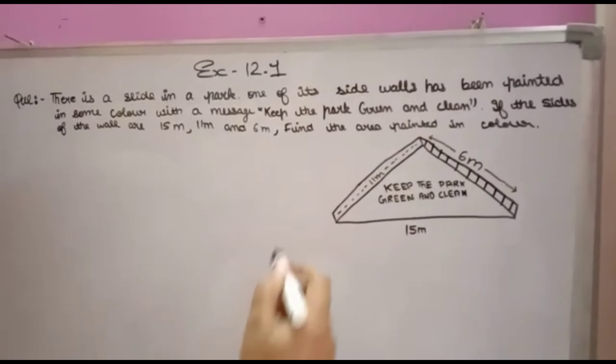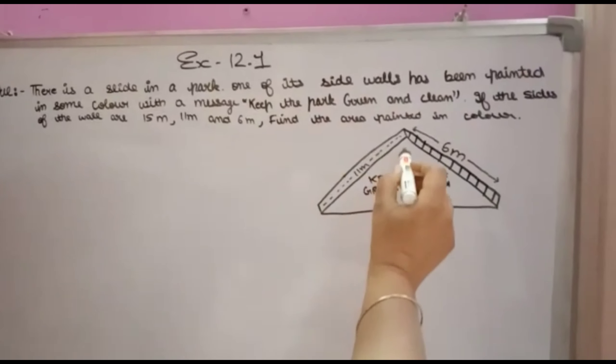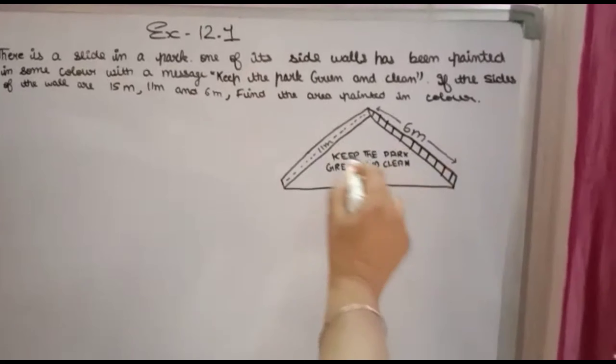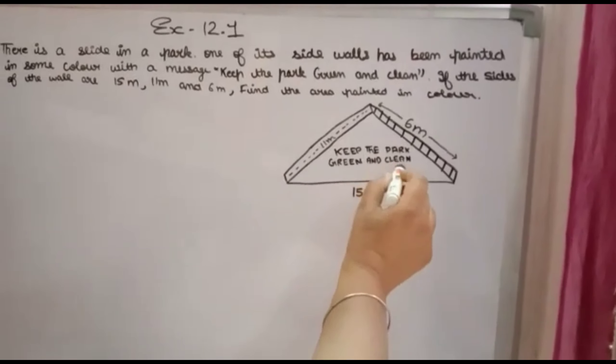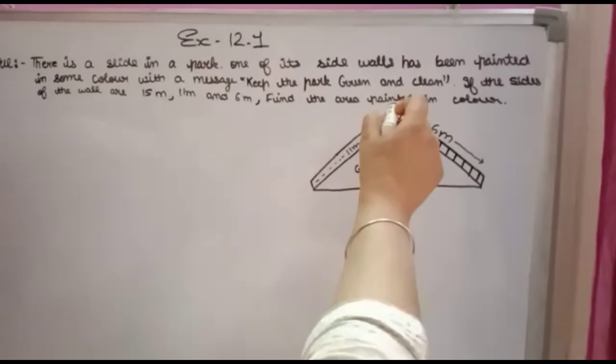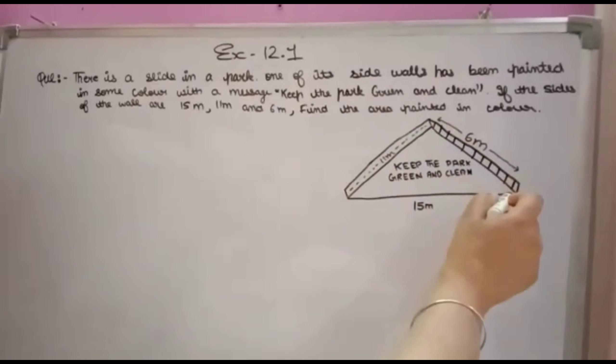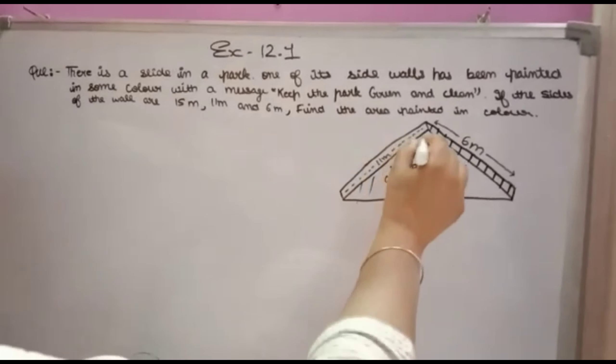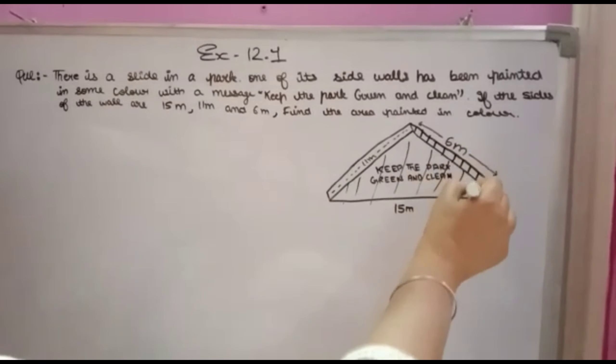One of its sidewalls has been painted with some message 'Keep the park green and clean'. The sides of the wall are 15 meter, 11 meter, and 6 meter. Find the area painted in color.